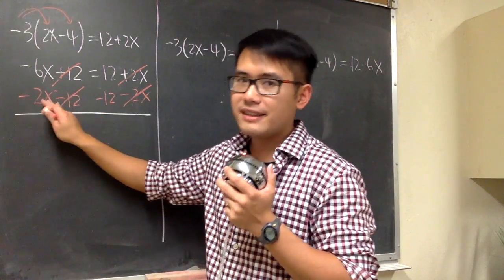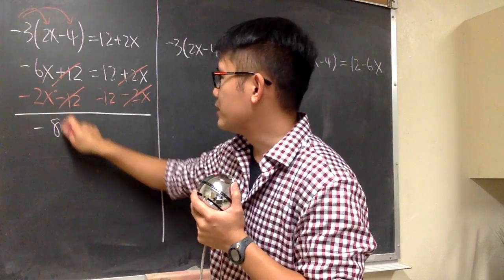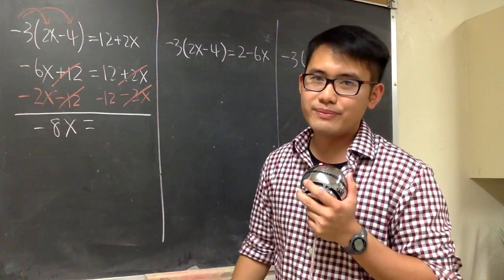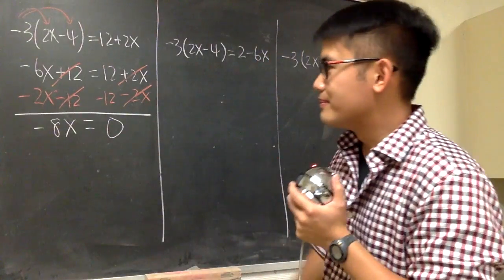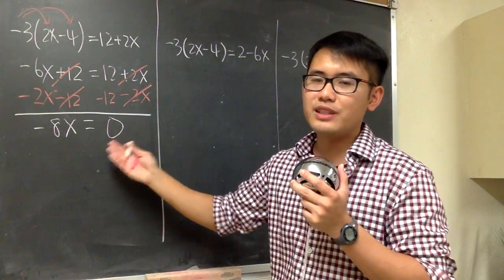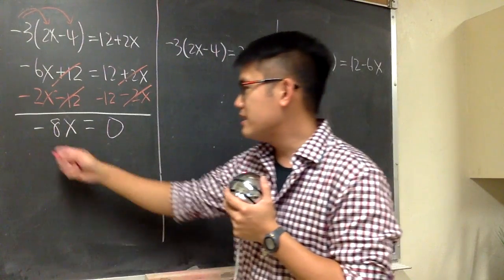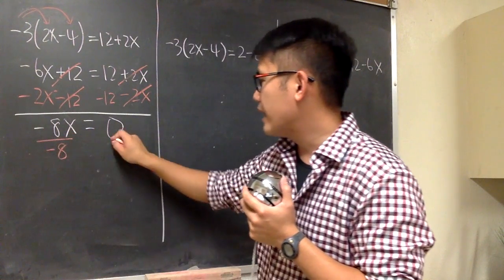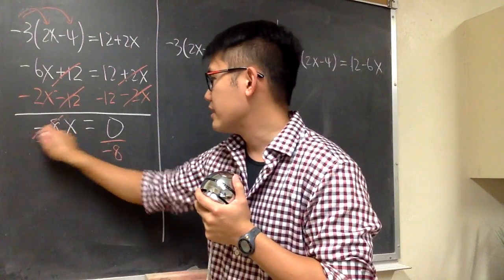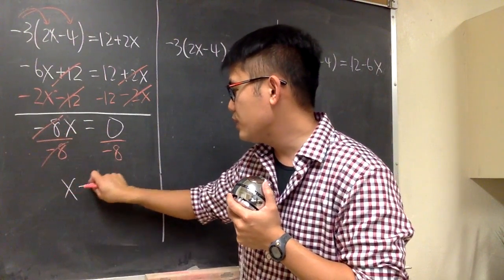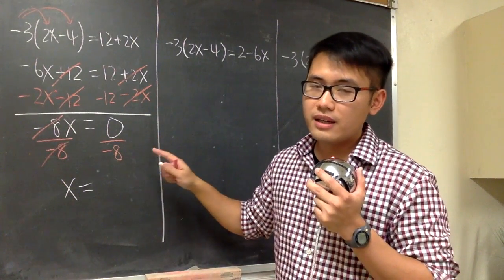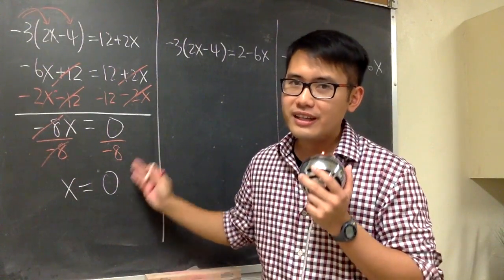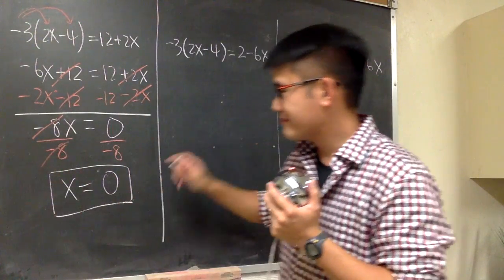Negative 6x minus 2x, we get negative 8x. And this is equal to 12 minus 12, we happen to get 0. So we have negative 8x equal to 0. Can we solve this? Sure. Because this is negative 8 times x, we are just going to divide by negative 8 on both sides. This and that will cancel, and x is equal to 0 divided by negative 8, which gives us 0. In this case, we do have an answer — the answer to this equation is 0.